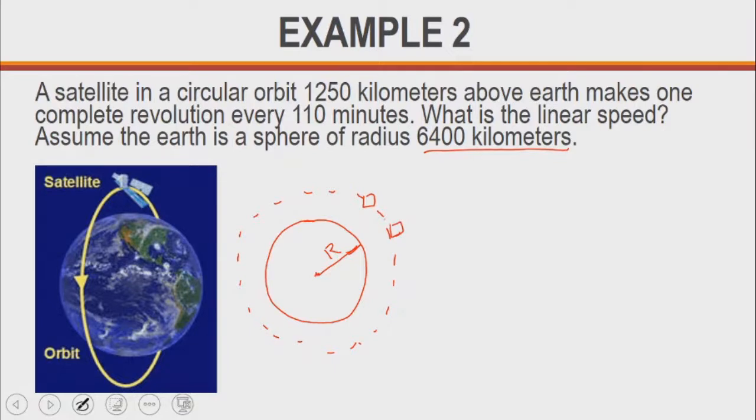The satellite also makes this small r which is 1,250 kilometers. So the total r in this case for our orbiting satellite will be the bigger r plus small r. The radius in this case will be 6,400 plus 1,250, and both are in kilometers, so that's good for us. This is going to give us 7,650 kilometers. So that will be the r that we are going to use in our calculation.